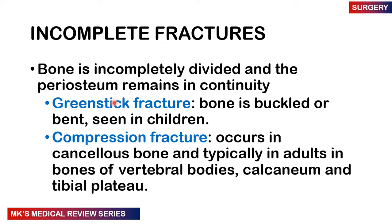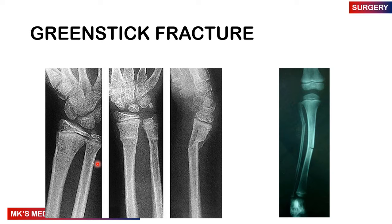Compression fractures occur with cancellous bones, typically in adults — the vertebrae, calcaneum, and tibial plateau are commonly affected. A greenstick fracture looks like this: you can see it happening at the wrist and in the lower limb, affecting both the tibia and fibula. One half of the cortex is broken on one side and intact on the other — that's a greenstick fracture.